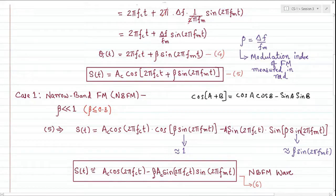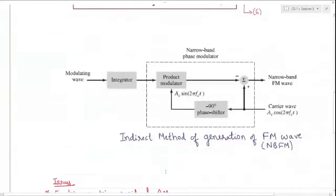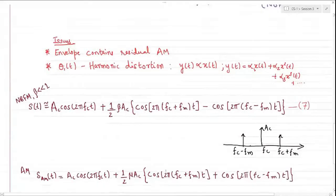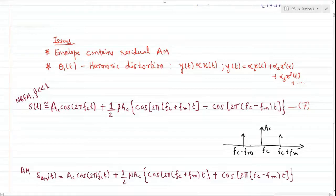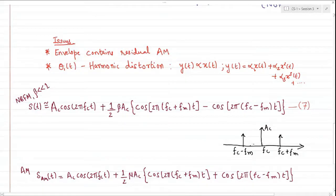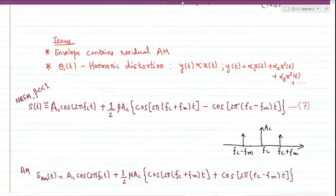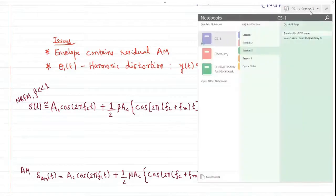This is an approximate representation of the FM signal. The striking similarity between the narrow band FM wave and amplitude modulation with respect to their frequency spectrum is that there's only an algebraic sign difference between an FM wave generated with beta much less than one and an amplitude modulated wave. The bandwidth of narrowband FM appears to be very similar to an AM wave, though this may not be true in all cases.